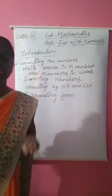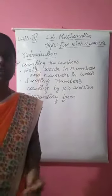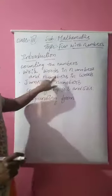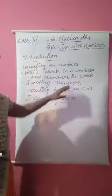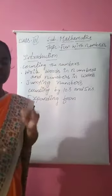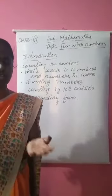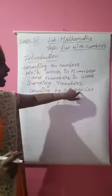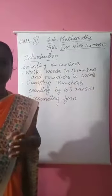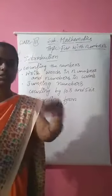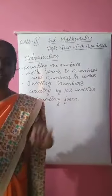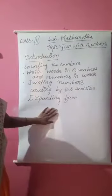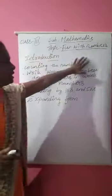Counting the numbers — you are counting many numbers in day-to-day life. Next, we will be writing words in numbers and numbers in words. Jumping numbers — you will be jumping the numbers, meaning you are skipping the numbers like a pattern, which you studied in the last class. And counting by 10s and 50s: you will be jumping 10 numbers at a time. Like you have 20, next will be 30, then 40. And expanding the numbers — these are the topics we are dealing with.